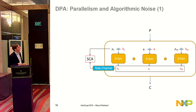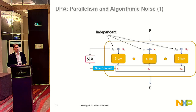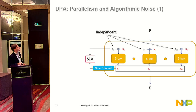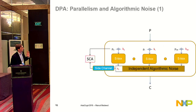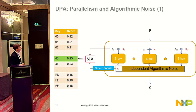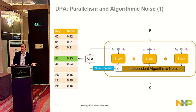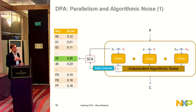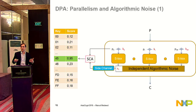In a parallel implementation we don't only leak about one intermediate value but also about the others. Fortunately, the plaintext bytes are independent, so we can marginalize the distribution of these S-Boxes. The noise produced by these S-Boxes becomes independent algorithmic noise, which we can easily model and take into account during the attack. If you have more algorithmic noise we need more traces, but we can always recover the key given enough traces. We get 16 score vectors suggesting the 16 key bytes.